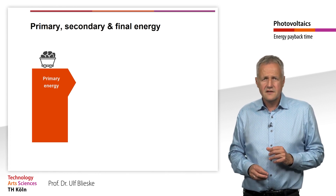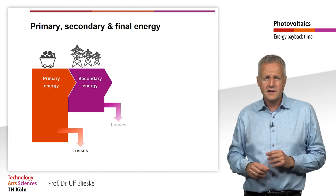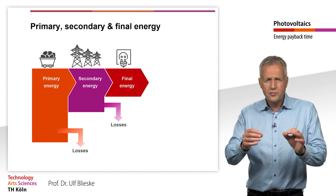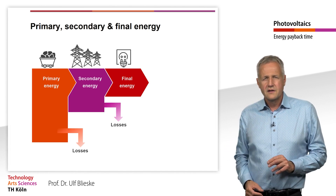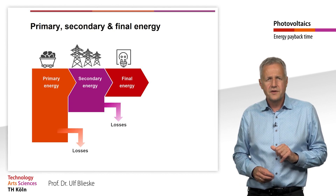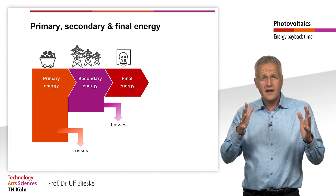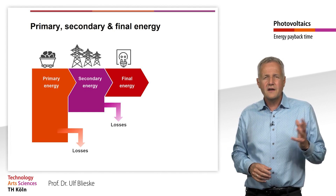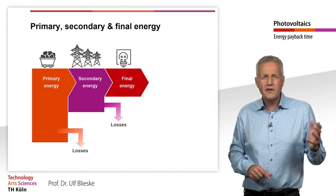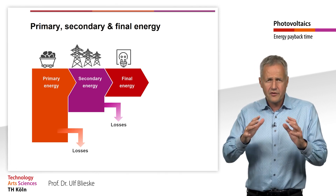This energy is now converted with losses into secondary and finally into final energy. The final energy is the energy that is available to the consumer — that is, the electrical energy in the household. However, further transport and conversion losses also occur at the consumer. The final energy minus these losses is called useful energy. However, the reference value in an energy balance is the primary energy.